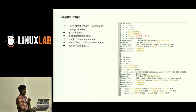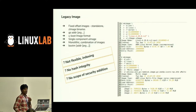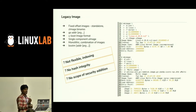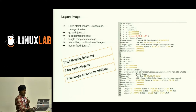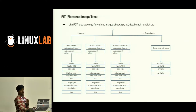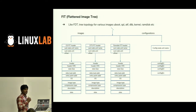The problem with legacy images is that they are not flexible — we need to maintain indexing and there's no possibility to add features like security. These legacy images are for developers only and cannot be used in production. So we came up with the idea of a Flattened Image Tree (FIT), where all images are described in a device tree manner — the device tree, Linux kernel, and rootfs can all be included and it is extendable for new features like security.